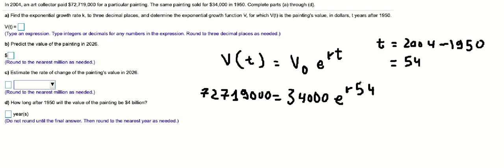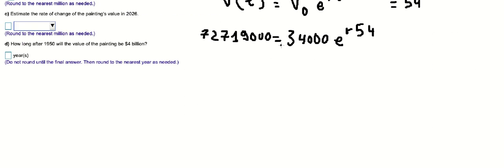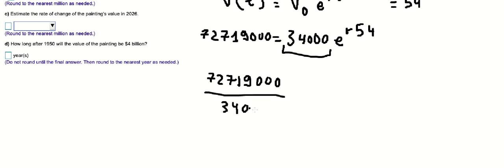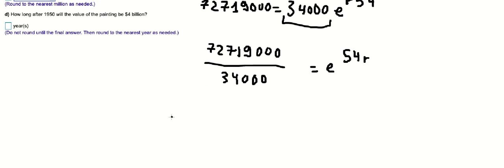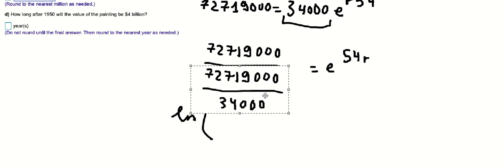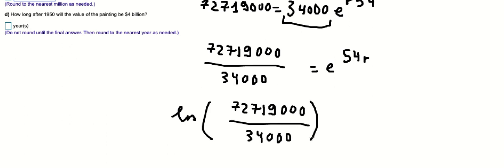Now we need to find the value of k, so we divide both sides by that number, then we put the natural log for both sides. So we have the formula here.